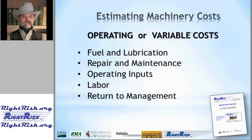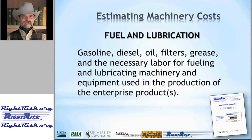Once we've defined the ownership costs, the next category is operating or variable costs. That category includes a number of different items: fuel and lube, repair, maintenance, and so on. We'll run through each of those.